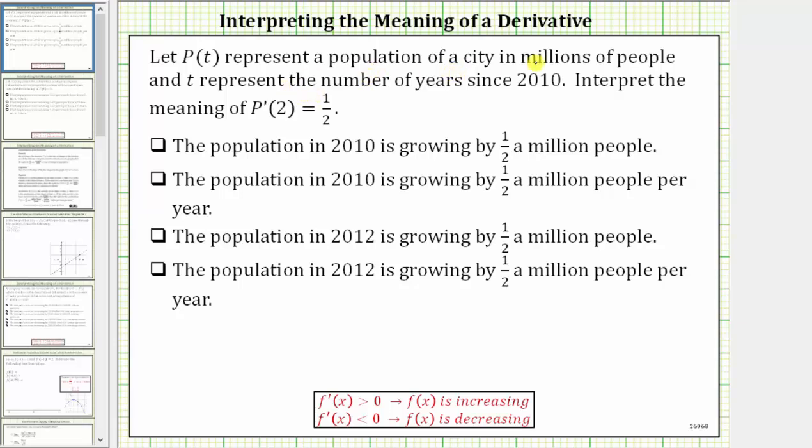Let P(t) represent a population of a city in millions of people and t represent the number of years since 2010. Interpret the meaning of P'(2) = 1/2.